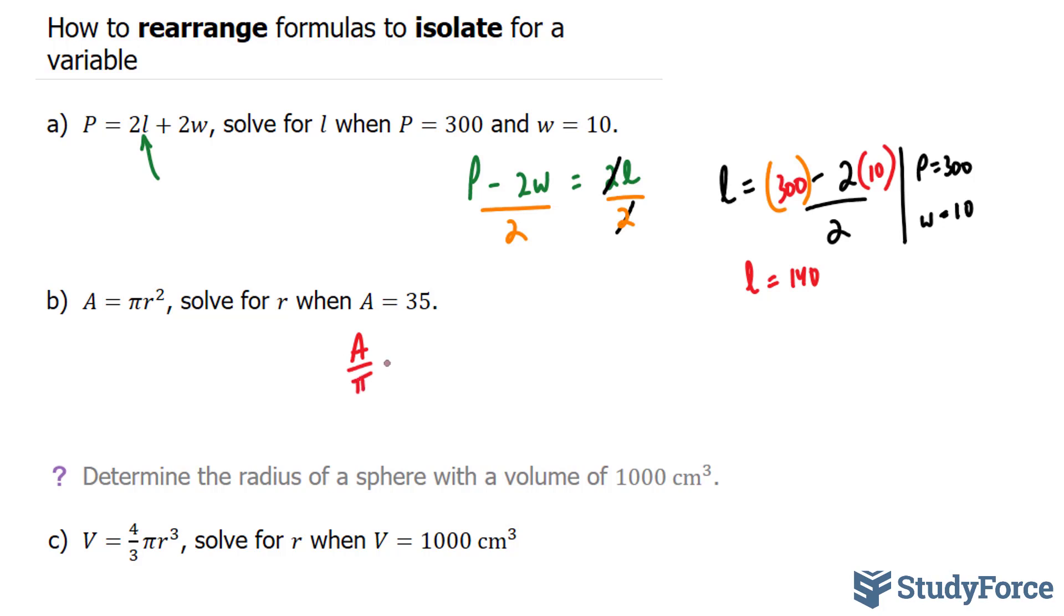And if we do that, we end up with A over pi is equal to R to the power of 2. Now we have this squared value right here. R is being squared. To get rid of a squared value, you square root both sides. The square root of R squared and the square root of A over pi. Now this radical symbol will get rid of this 2, where we end up with R is equal to the square root of A over pi.